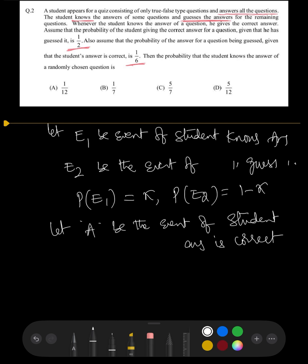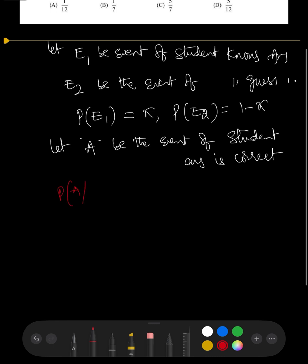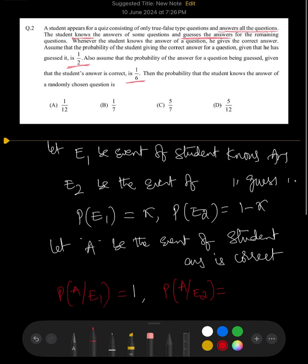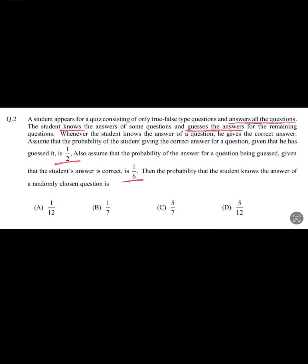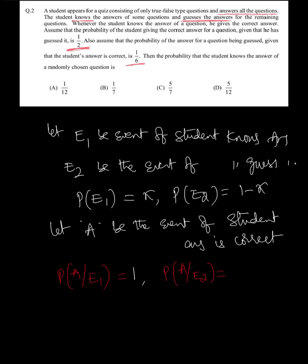We identify event A as the student's answer being correct. P(A|E1) = 1, since if the student knows the answer, he gets it correct. P(A|E2) = 1/2, since if he guesses, the probability of being correct on a true/false question is 1/2.